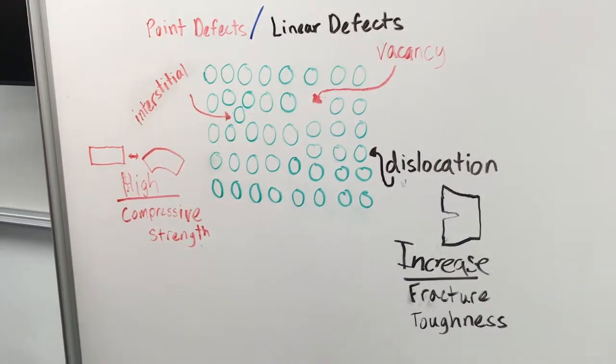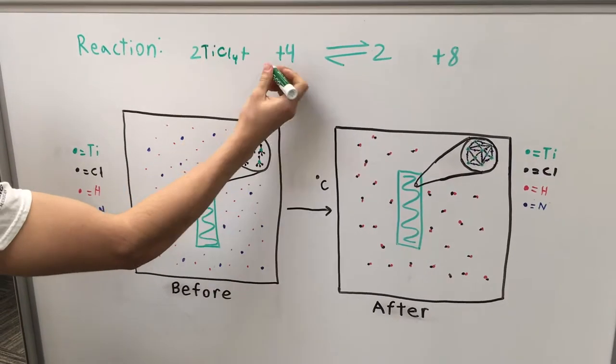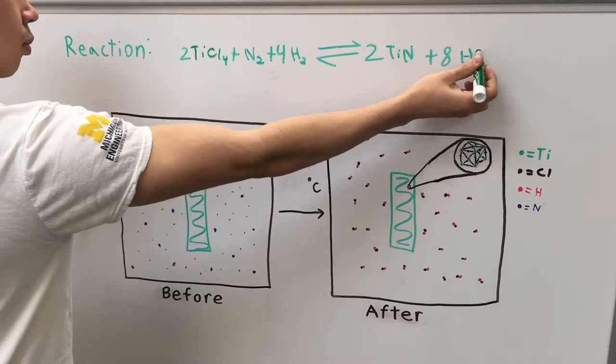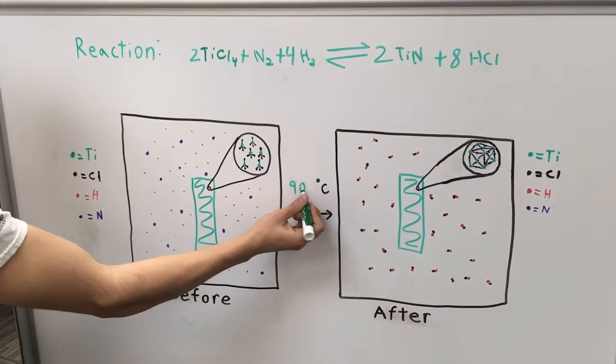One way titanium nitride can be produced is through chemical vapor deposition. This is a process where the workpiece is coated in a titanium compound and heated in a nitrogen and hydrogen atmosphere to produce the TiN coating.